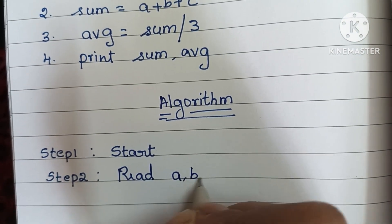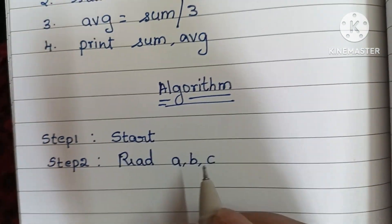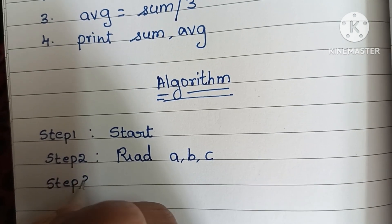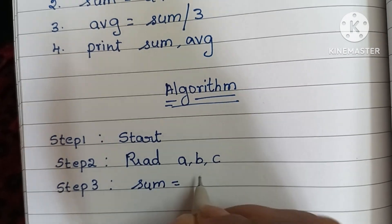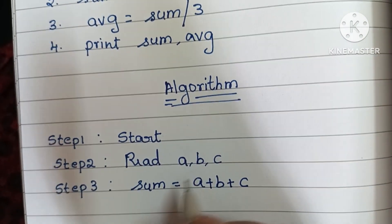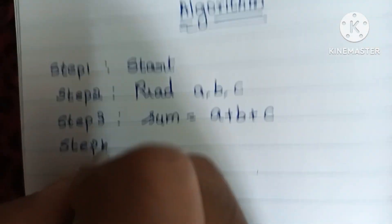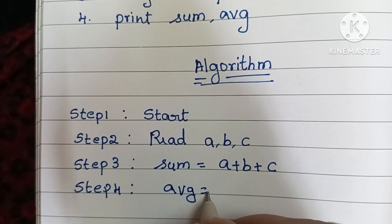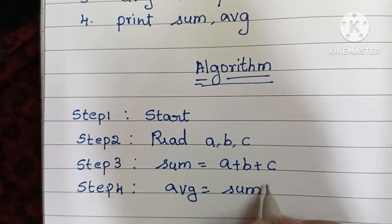Step 2: to find sum and average of three numbers, first we have to read three numbers — a, b, and c. Variables a, b, c represent three numbers. Step 3: calculate sum — sum is equal to a plus b plus c. We add the three numbers.